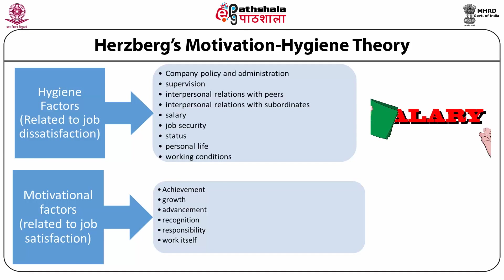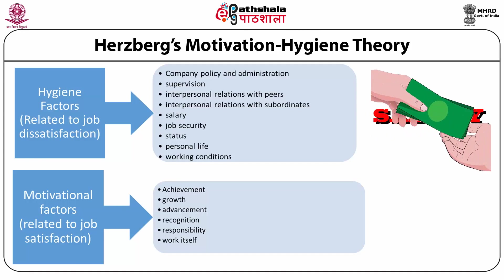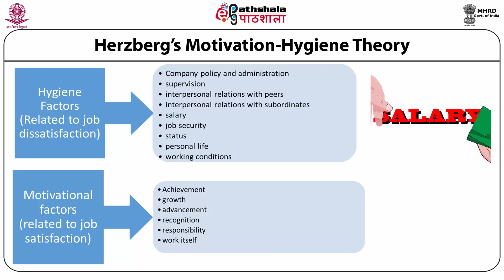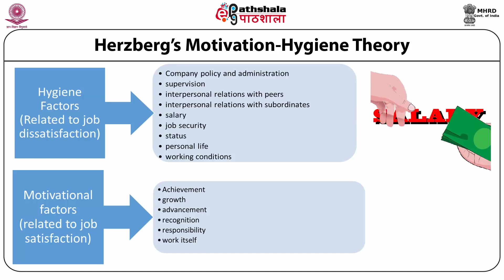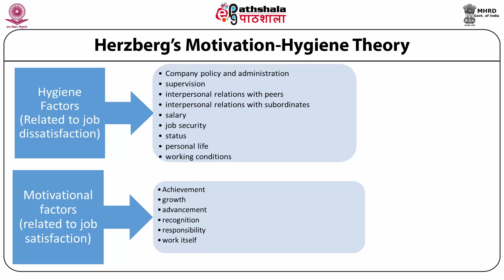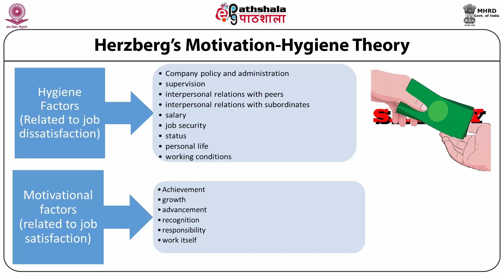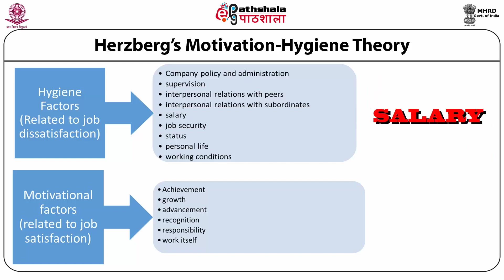In the exhibit shown here, we can see the list of hygiene factors as well as motivational factors. Hygiene factors given by Frederick Herzberg include company policy and administration, supervision, interpersonal relationships with peers, and interpersonal relationships with subordinates.